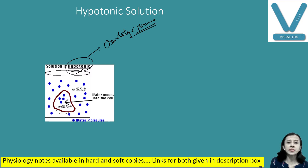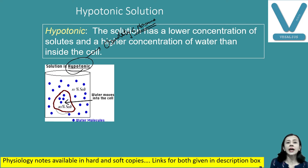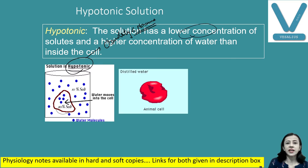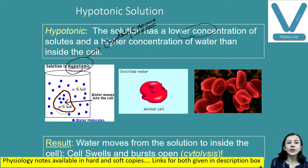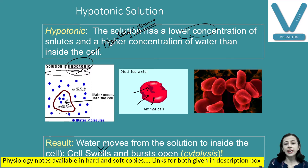When we place the cell in hypotonic solution, as we discussed, fluid moves from outside to inside. You can see here — fluid moves from outside to inside — and that results in swelling of the cell. The cell swells and bursts.